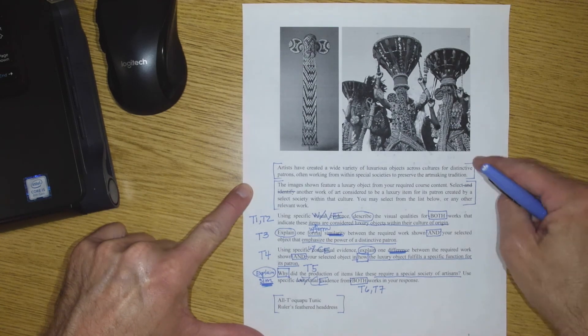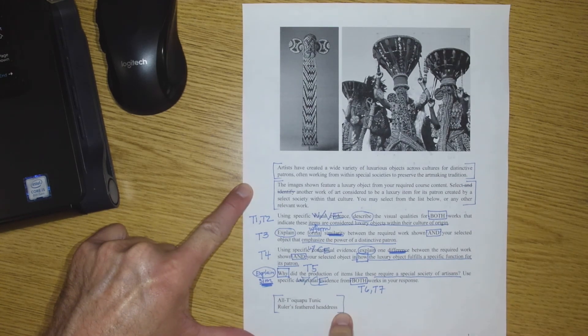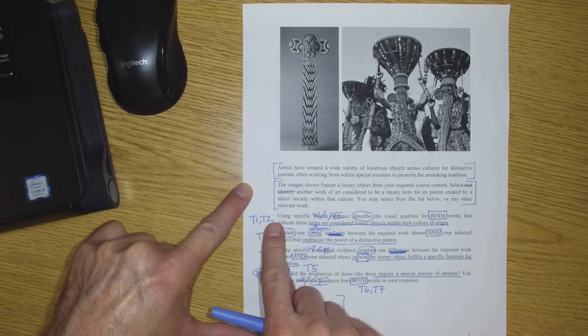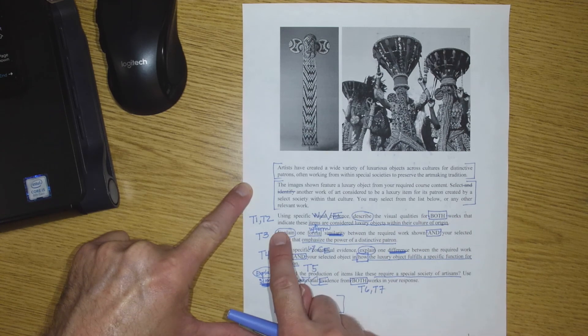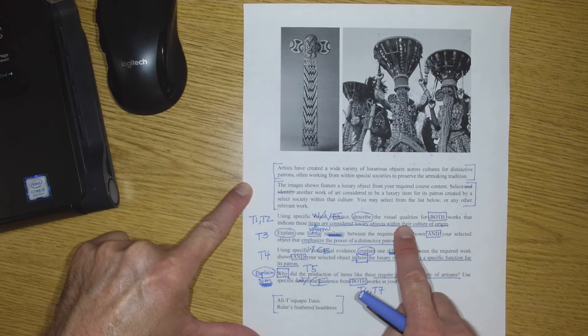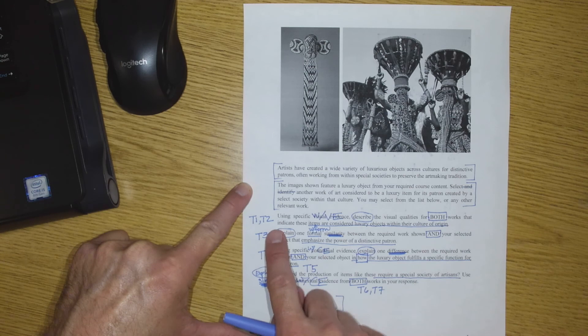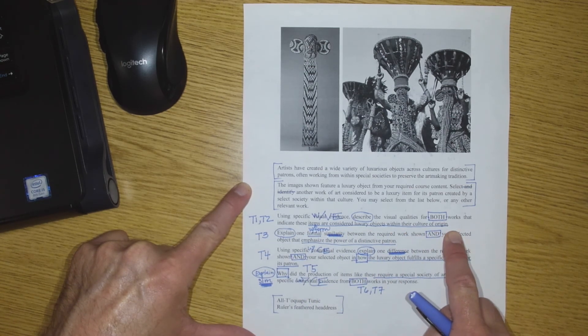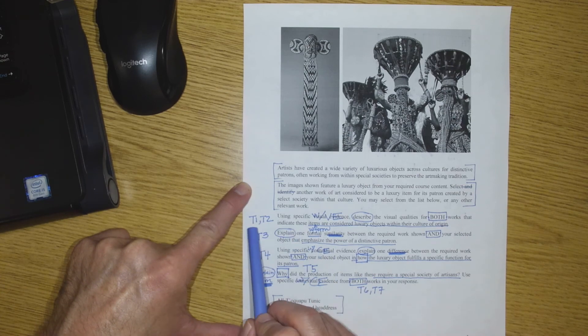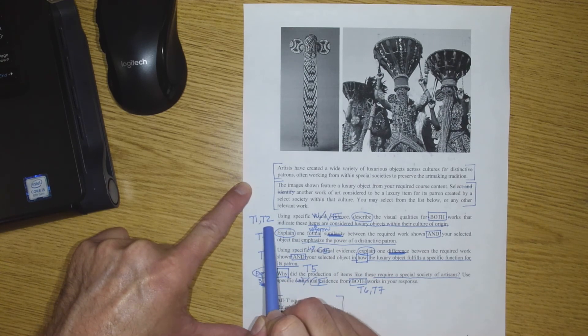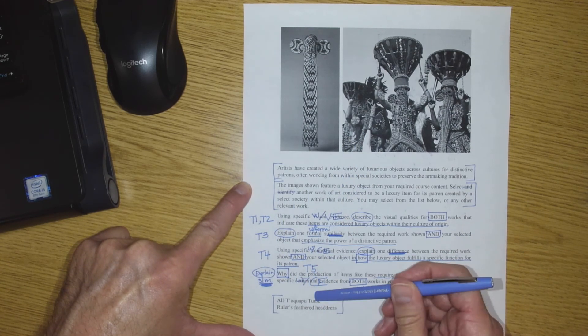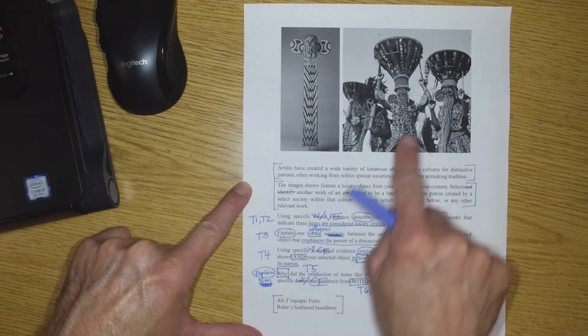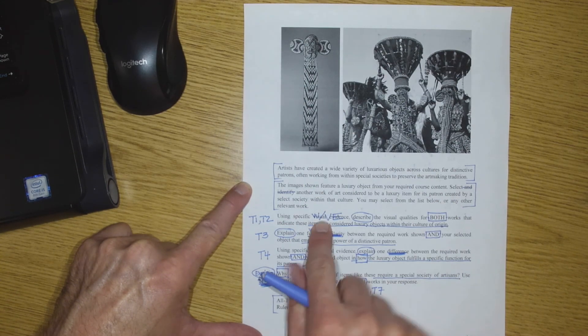All right, so going back here, I marked the parts that didn't really do very much for us. You can see the description is up front in this question. So it says, describe the visual qualities for both works that indicate these items were considered luxury objects within their culture of origin. You have to know why on T1 and T2, why these cultures considered those things valuable. So I think that's fairly easy to describe using the visual evidence.